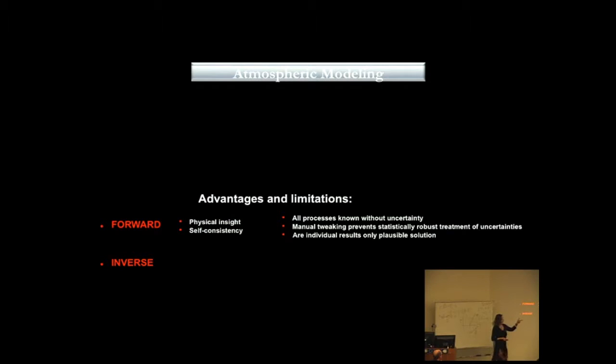Unfortunately, the disadvantages of this model is that all the physics and chemistry that is put in these models are put without any uncertainty. The manual tweaking of the parameters prevents us from providing some statistically robust treatment over uncertainties. And even if we get the final solution, we never know whether it's the only plausible one.